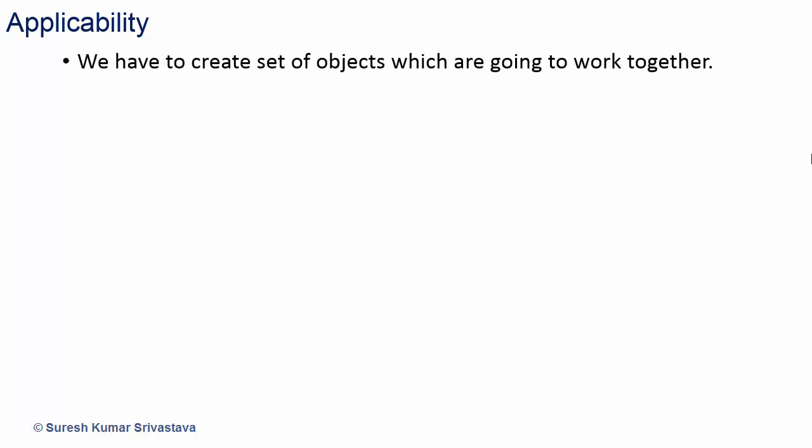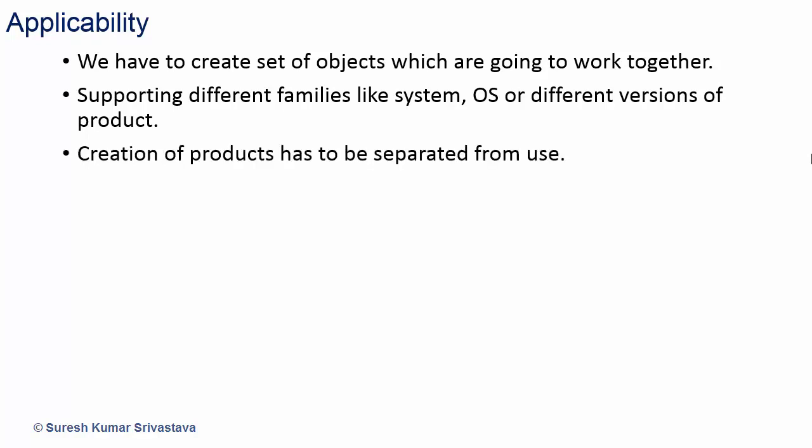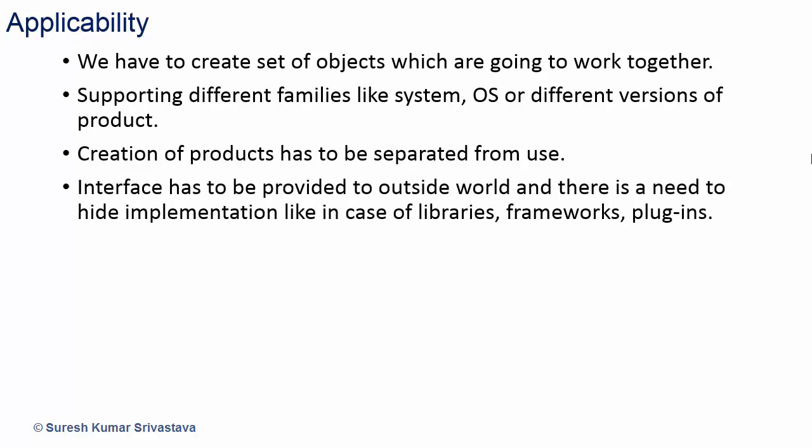Where is the Abstract Factory pattern applicable? It applies when we need to create a set of objects that are dependent or related and will work together — supporting different families like systems, OS, or different versions of a product. There may be many more use cases: browsers, file systems, databases, networks, etc. It is applicable when creation of products must be separated from use, so object creation and use are not mixed. It also applies when an interface must be provided to the outside world and implementation needs to be hidden — as in libraries, frameworks, and plugins — where the application just uses the interface without needing to know the implementation.